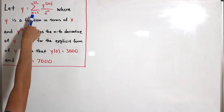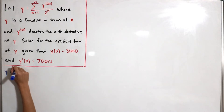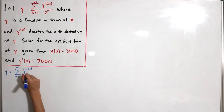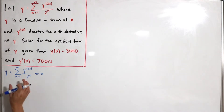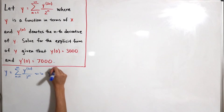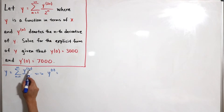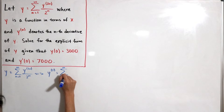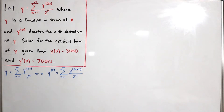For Method 1, we let y equal the infinite sum of y^(2n) divided by 2^n. We differentiate both sides twice. After taking the second derivative, the numerator becomes y^(2n+2) because differentiating twice adds two to the derivative index, while the denominator remains 2^n.